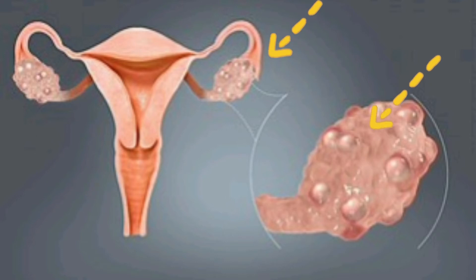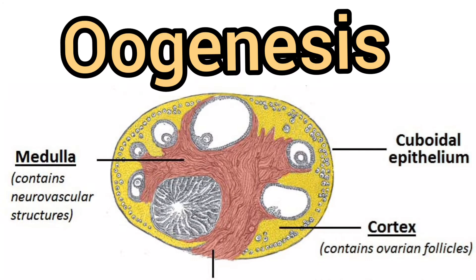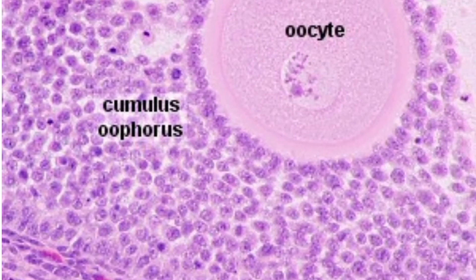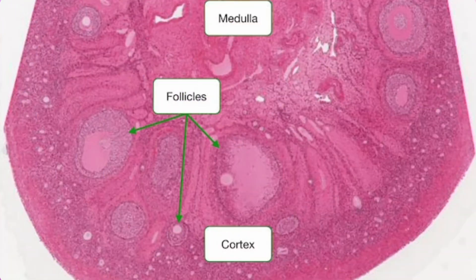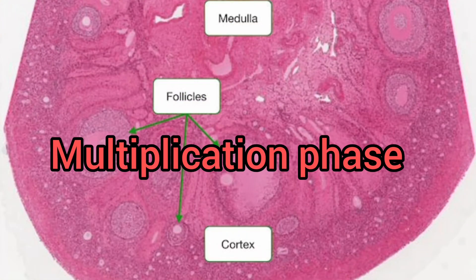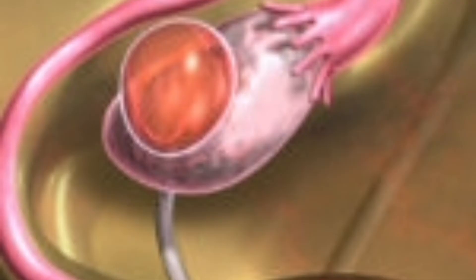Ovaries are paired, almond-shaped, solid, and grayish structures found in the female body. Anatomically these are differentiated into germinal epithelium, tunica albuginea, cortex, and medulla. Formation of ova, that is oogenesis, takes place inside the ovary. The events involved in oogenesis are the multiplication phase, growth phase, and maturation phase, which you have already learned in your theory part.